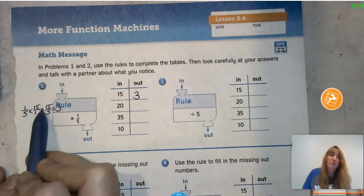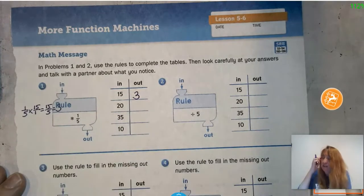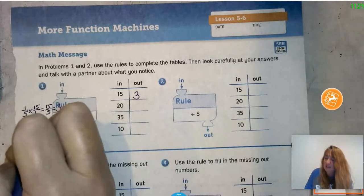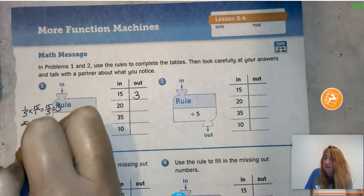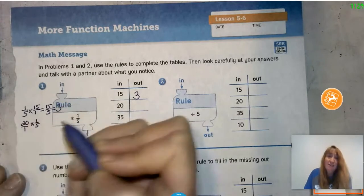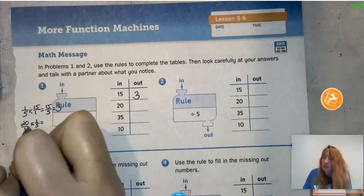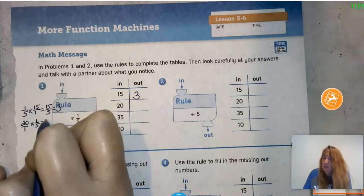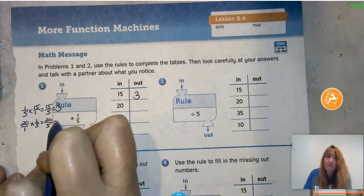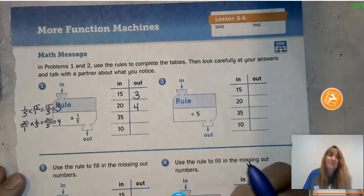You'll notice I put the 1/5 first, but I could put it second — it doesn't really matter. Let me show you with the next one. So 20 times 1/5: I put the 1 underneath the 20 and multiply across. 20 times 1 is 20, and 1 times 5 is 5, so 20 divided by 5 is 4. Our answer is 4.